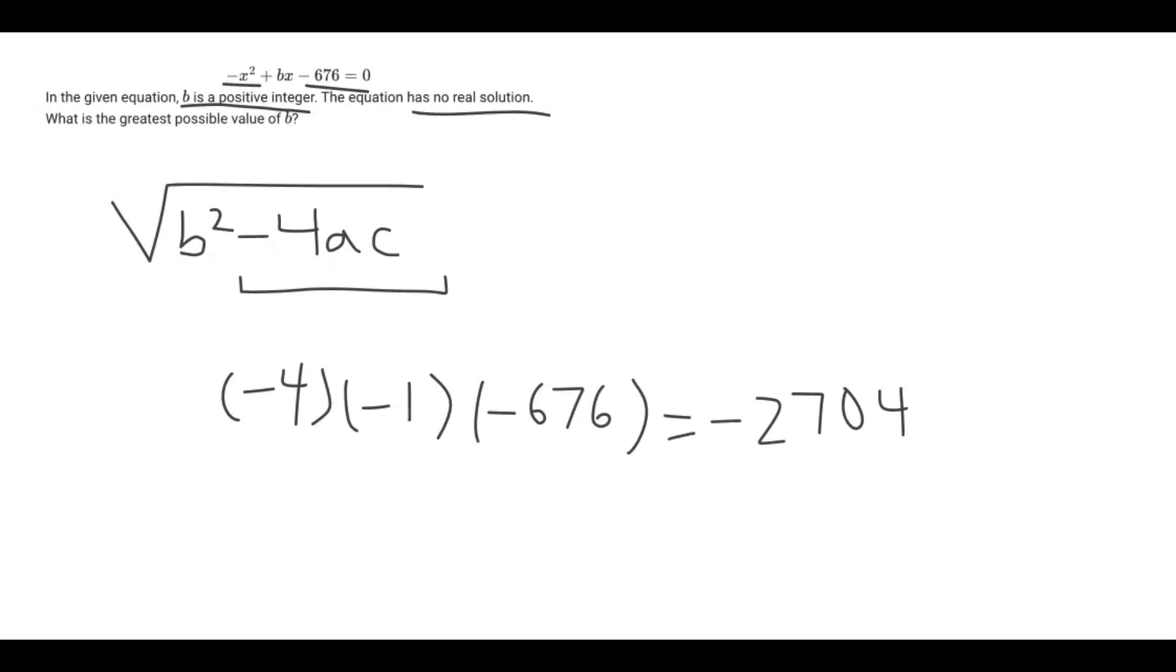As we talked about before, we need to know that the value of B squared has to be less than 2,704, but it has to be the greatest possible value.